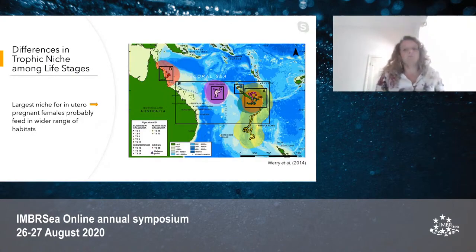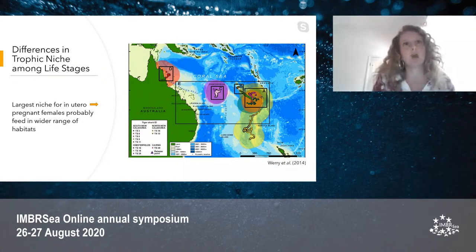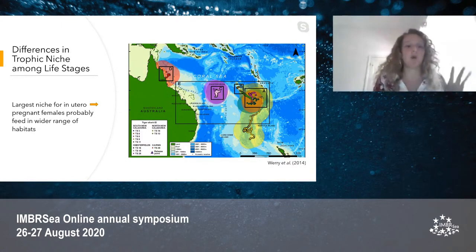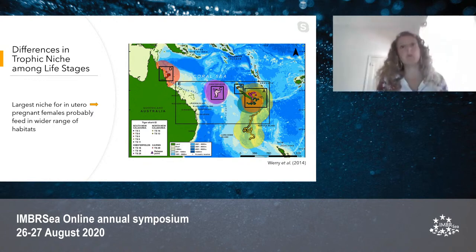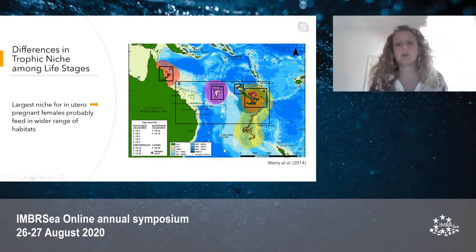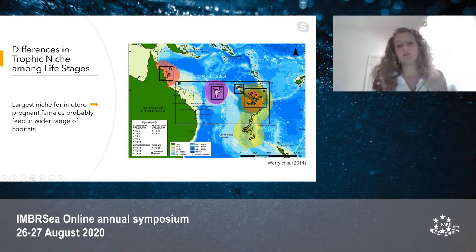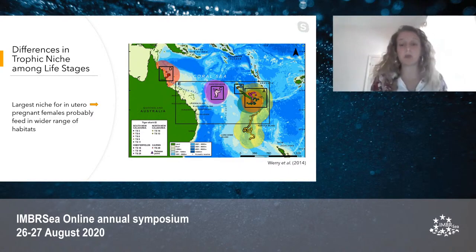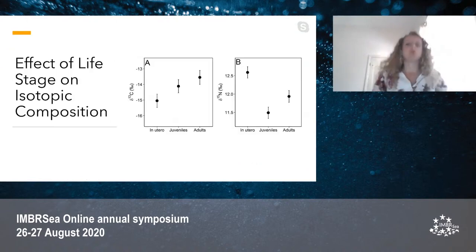The in utero stage can be considered a proxy of the mother's diet and habitat use, so the fact that we found the largest niche for in utero indicates that pregnant females probably feed across a wide range of habitats and prey. This was also suggested by studies from other parts of the world, including one conducted in the Coral Sea where we can see the range of movements of pregnant female tiger sharks shown in red, violet, and yellow, indicating they move across the entire Coral Sea, probably searching for suitable pupping and foraging grounds.